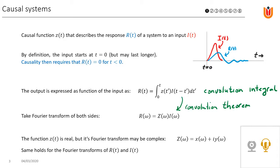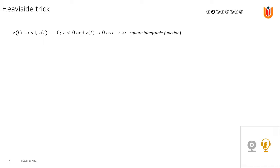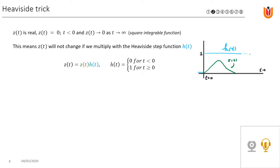The function z(t) is a real function, but its Fourier transform may be complex. Z(ω) has a real part x(ω) and an imaginary part y(ω). We now know that z(t) is real, z(t) is zero for times less than zero, and z(t) goes to zero as t goes to infinity — this is a square integrable function. This means we can apply a trick: z(t) will not change if we multiply it with a Heaviside step function H(t), which is defined as zero for t less than zero and equal to one for t greater than zero. So the equality holds: z(t) equals z(t) multiplied with H(t).